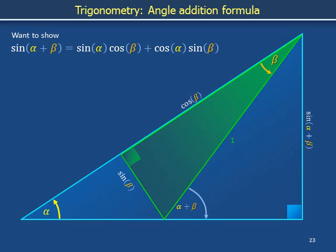The leg opposite the angle alpha plus beta has length sine of alpha plus beta. We use a purple H to label the length of the hypotenuse of the purple triangle and a pink X to label the length of one of its legs.